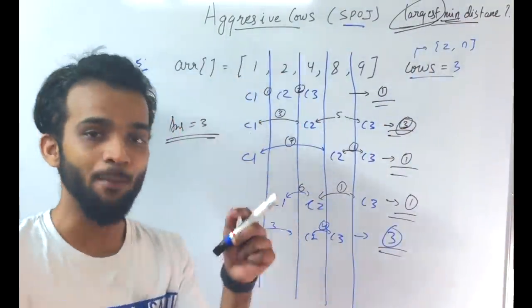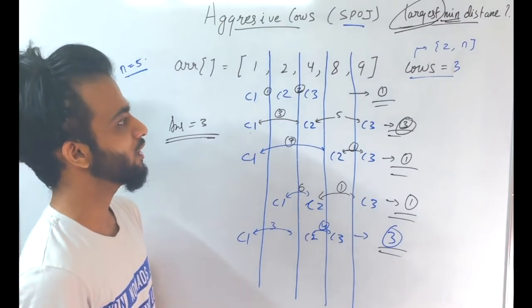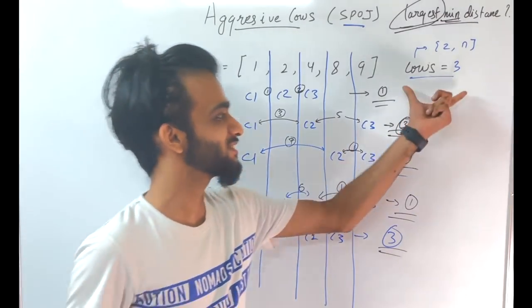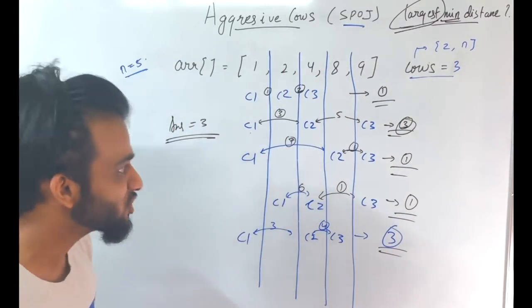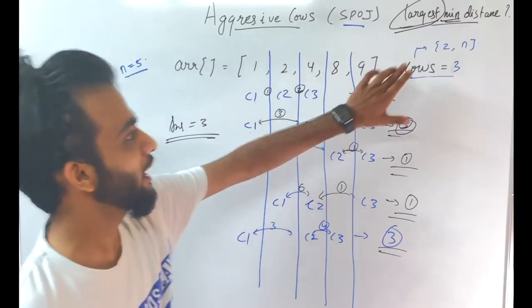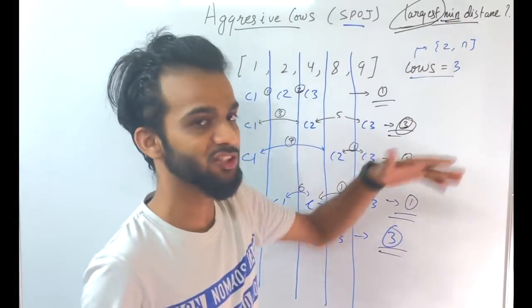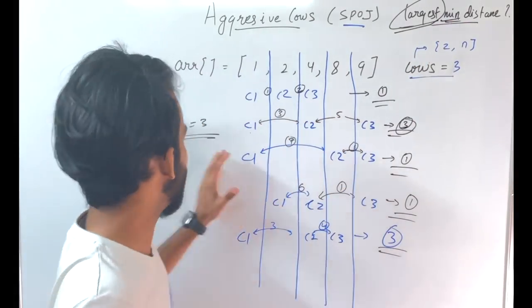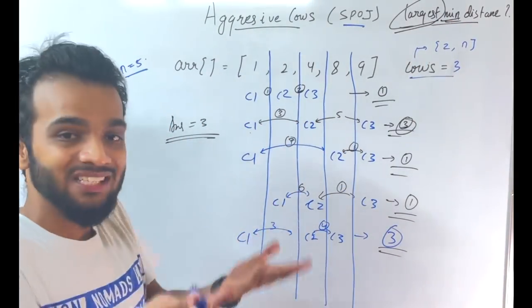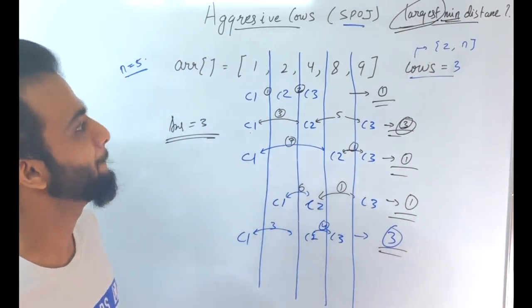To summarize: you have to place three cows among N stalls such that the minimal distance between cows is as large as possible.